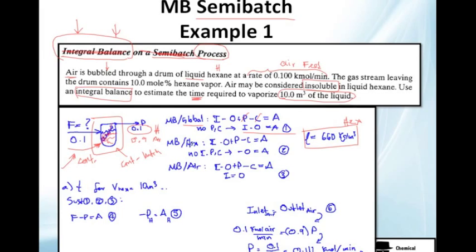Now let's do a mass balance of hexane. Hexane inlet, no, there's no inlet actually, so we're going to drop it. There's outlet, yes, it's going with the air so we cannot cross it. No production because no reaction and no consumption. So we have now minus outlet equals accumulation.